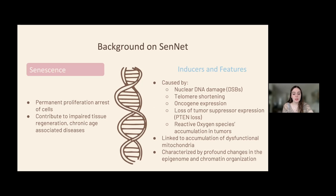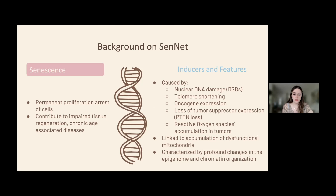Senescence is characterized by the permanent proliferation arrest of cells. It is known to contribute to impaired tissue regeneration, which can have positive effects, as well as chronic age-associated diseases, which can have negative effects. The three main phenotypes of senescent cells are that they enter permanent arrest of proliferation, become relatively resistant to cell death, and develop SASPs. Senescence occurs in response to stressors such as telomere dysfunction, oncogene activation, persistent DNA damage, loss of P10, which is a tumor suppressor gene, and the accumulation of reactive oxygen species in tumors, as well as aging.